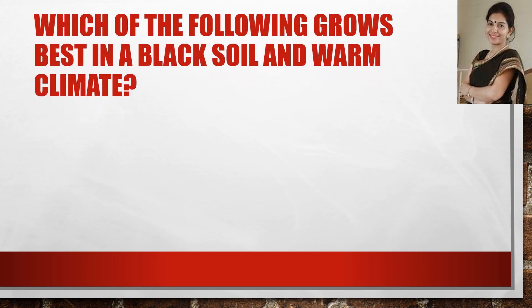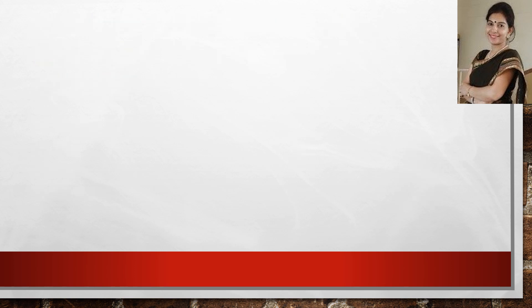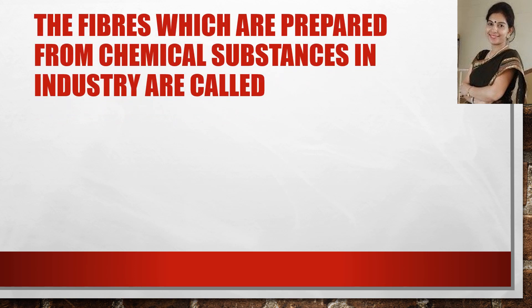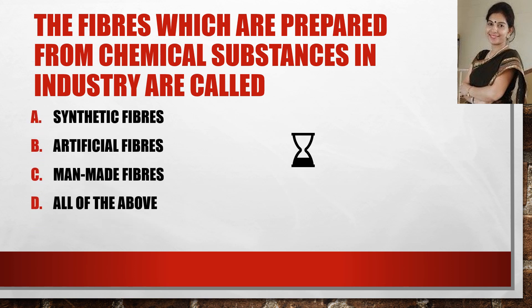Now the next question: which of the following grows best in black soil and a warm climate? The answer for this question is cotton. The fibers which are prepared from chemical substances in industry are called — and the answer is all of the above.